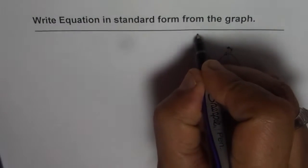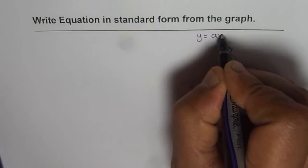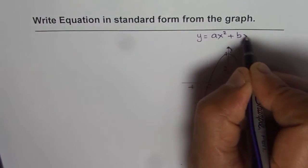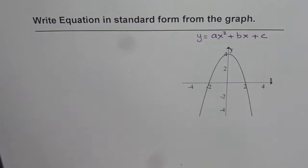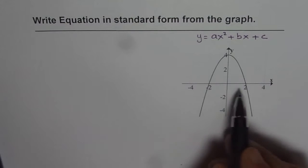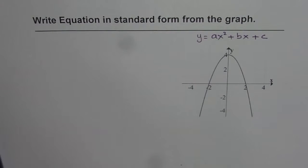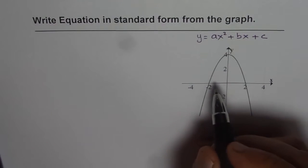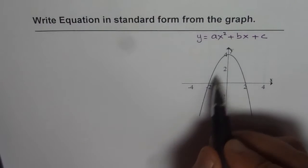Standard form is y equals AX squared plus BX plus C. What we can do here is start with an equation in vertex form or intercept form, expand, and get the equation in standard form. That is a good way to go about it. So let us begin with vertex form.